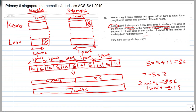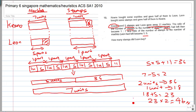How many stamps did Leon buy? Leon bought some stamps and gave half of them to Keen. So Leon's stamps: 1 unit plus 5 is 18 plus 5, which gives you 23. Then you multiply by 2 because he gave half of them to Keen, so that gives you 46. Therefore Leon bought 46 stamps.